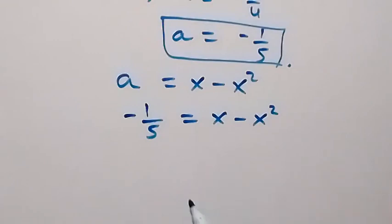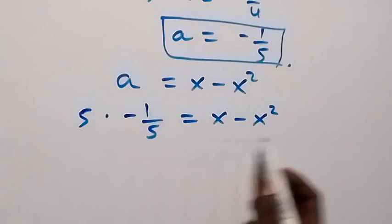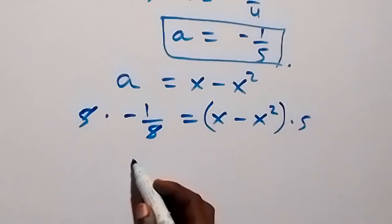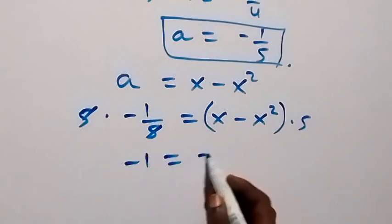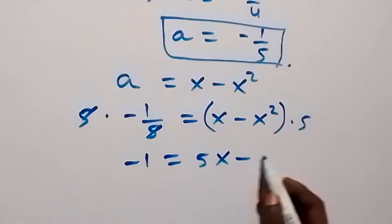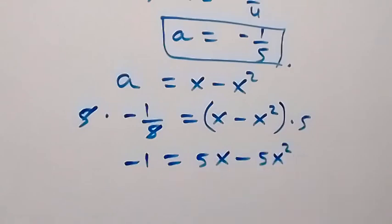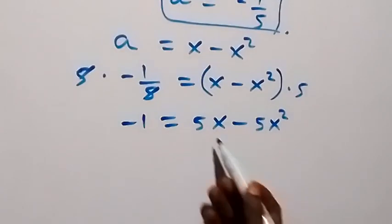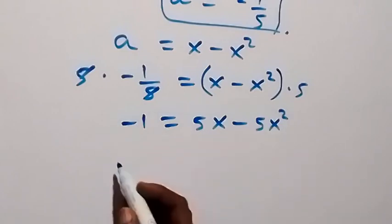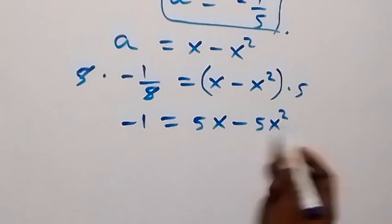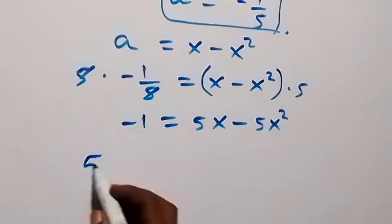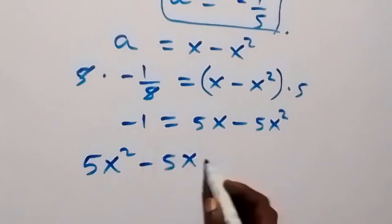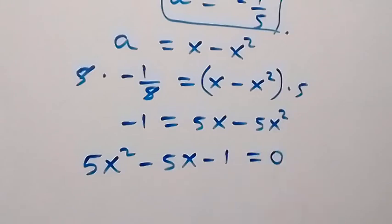We can multiply both sides by 5. This 5 cancels out, so we have minus 1 equals to 5x minus 5x squared when we open the bracket. Bringing everything to one side and rearranging: minus 5x squared becomes 5x squared, plus 5x becomes minus 5x, and we already have minus 1, then equals to 0.